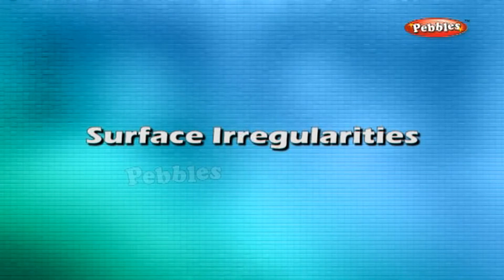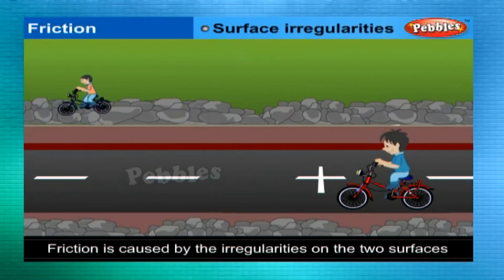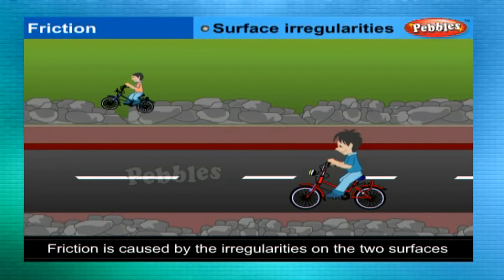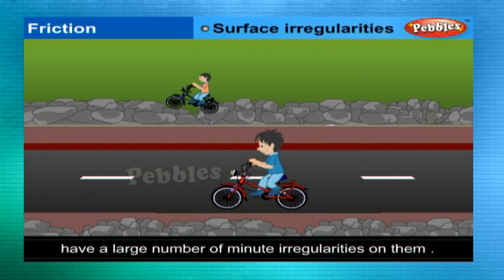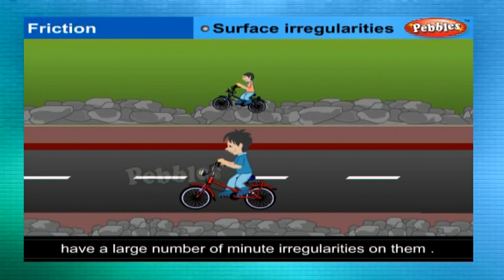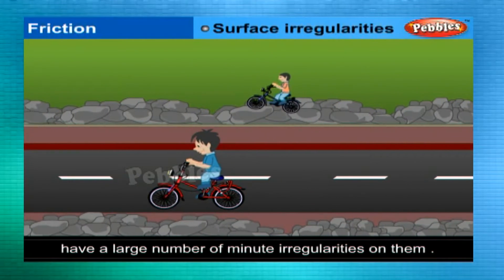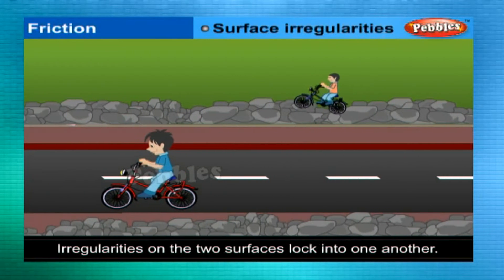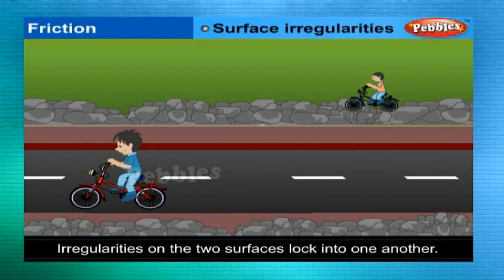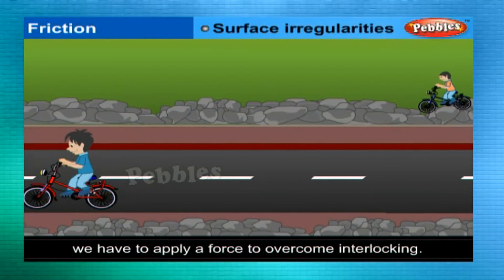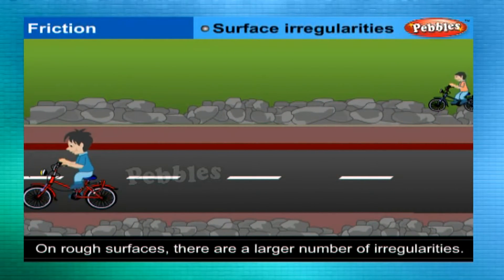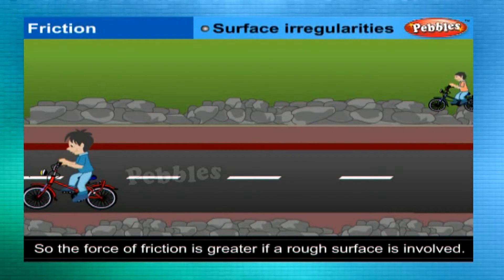Surface irregularities. Friction is caused by the irregularities on the two surfaces in contact. Even surfaces which appear very smooth have a large number of minute irregularities on them. Irregularities on the two surfaces lock into one another. When we attempt to move any surface, we have to apply a force to overcome interlocking. On rough surfaces, there are a large number of irregularities, so the force of friction is greater.